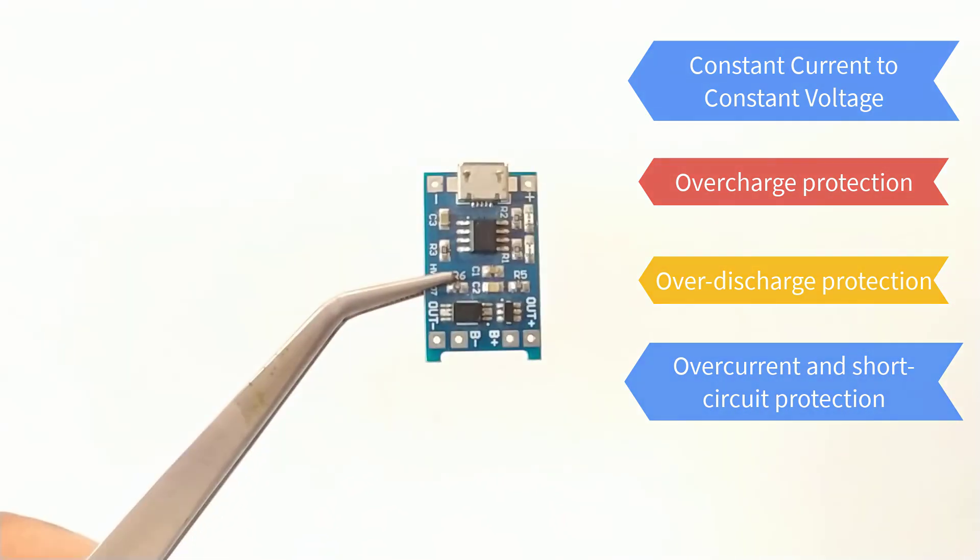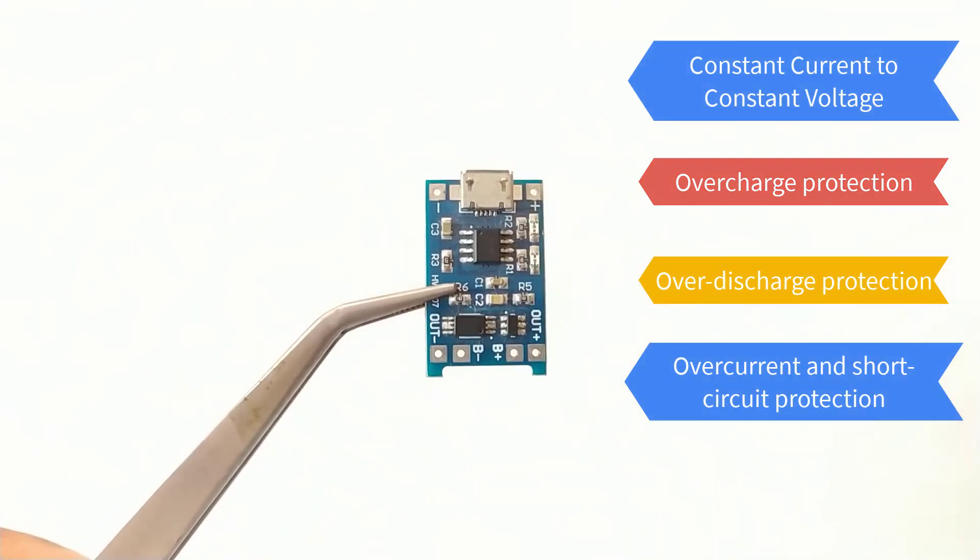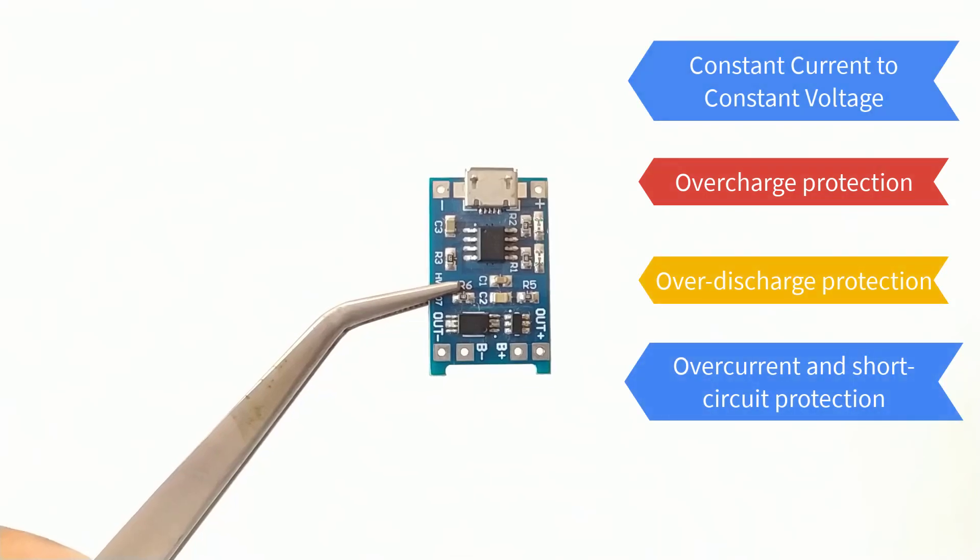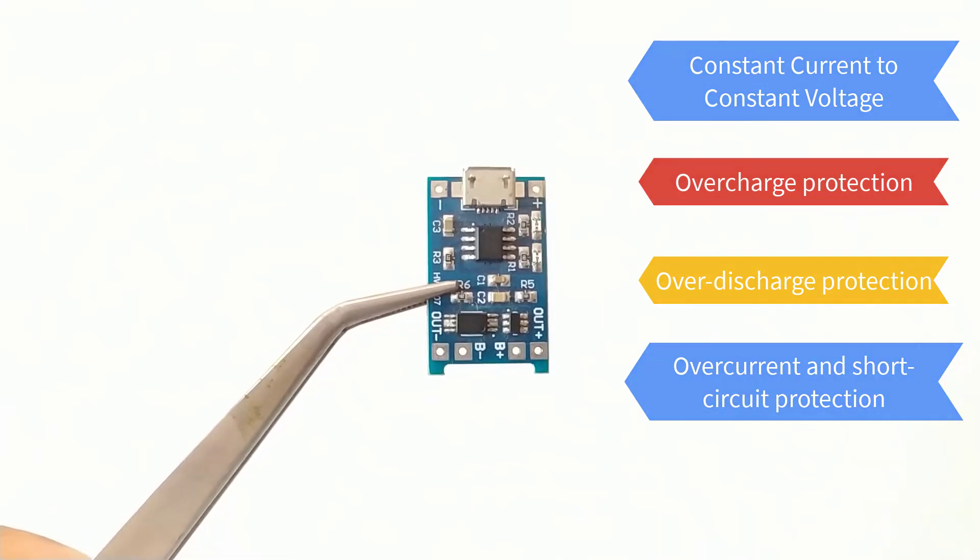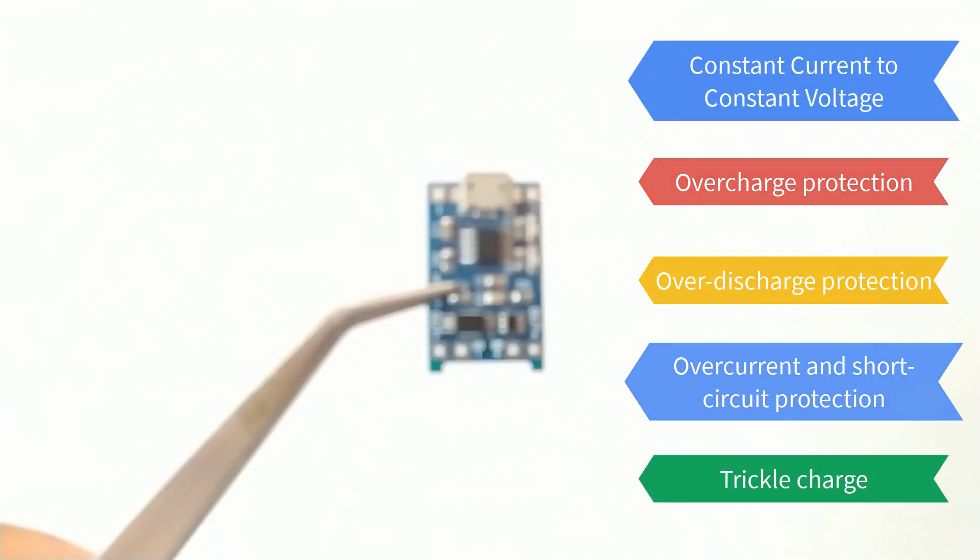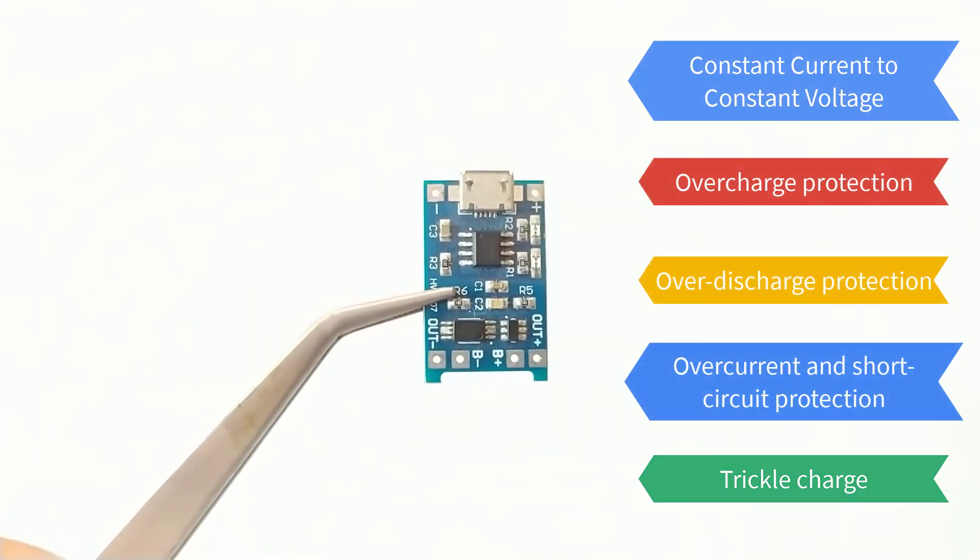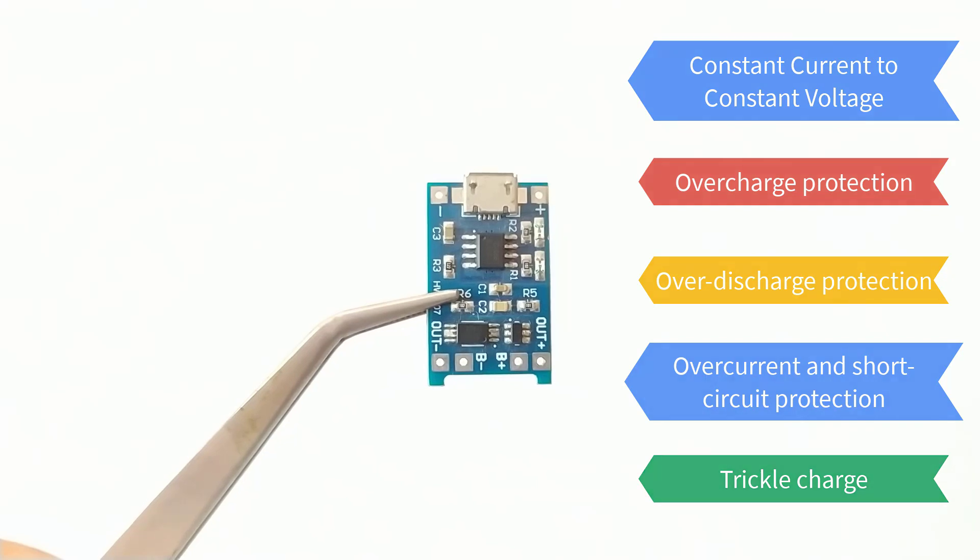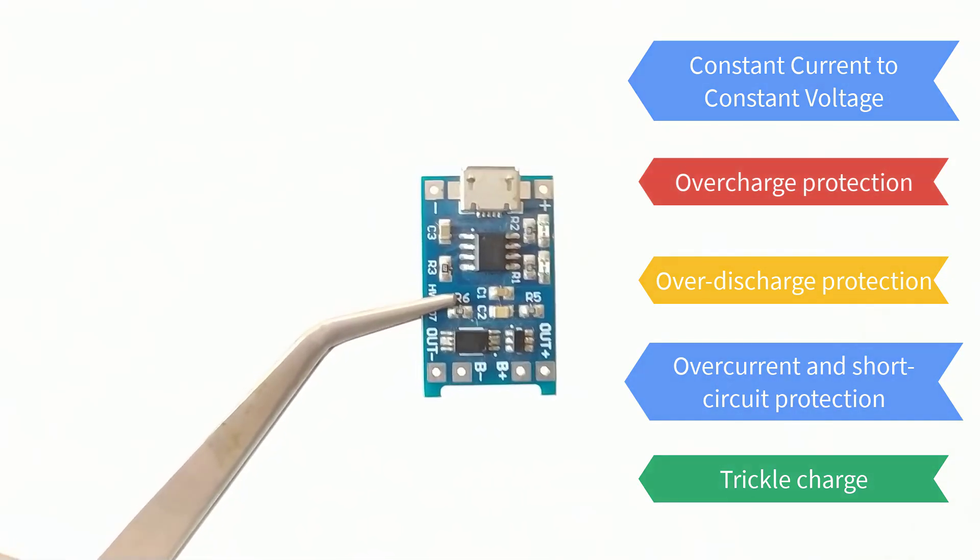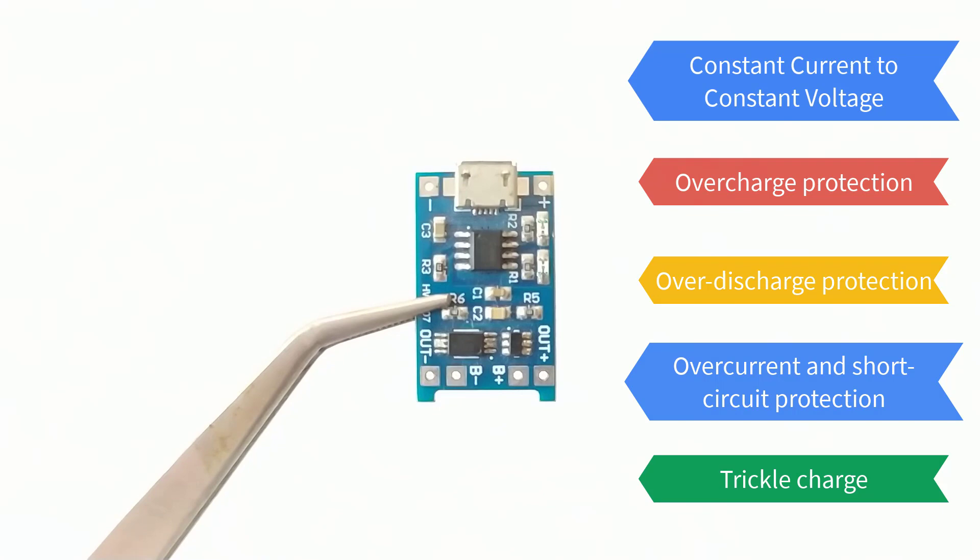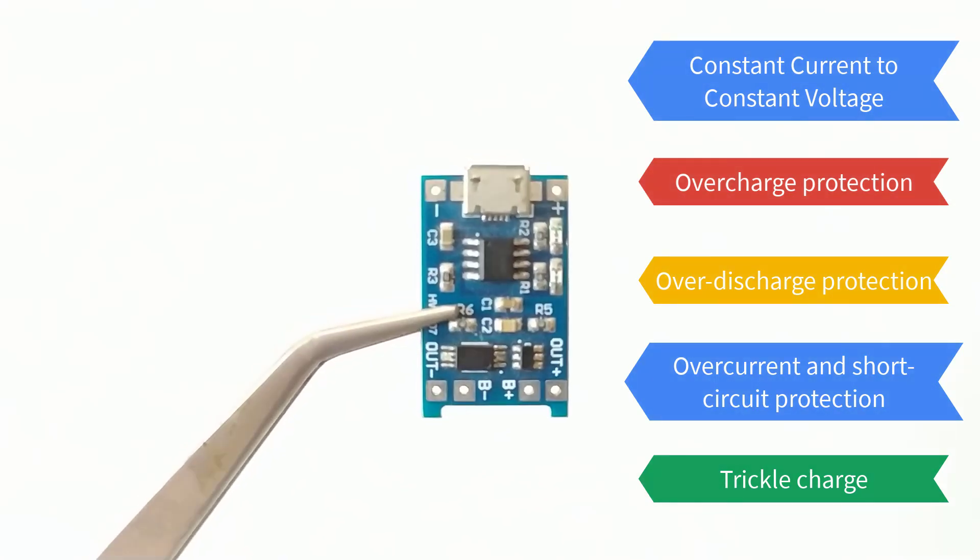The module will cut off the output from the battery if the discharge rate exceeds 3 amperes or a short circuit condition occurs. Trickle charge. If the voltage level of the connected battery is less than 2.9 volts, the module will use a trickle charge current of 130 mA until the battery reaches 2.9 volts or maximum.